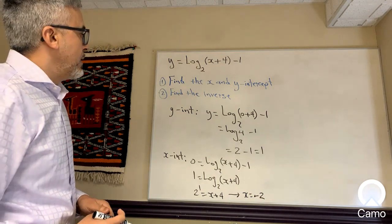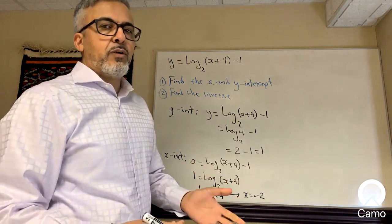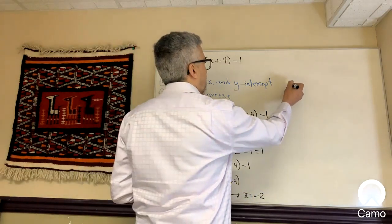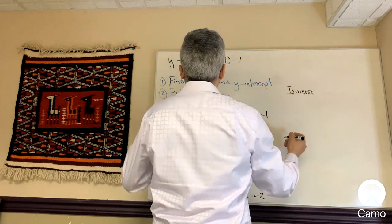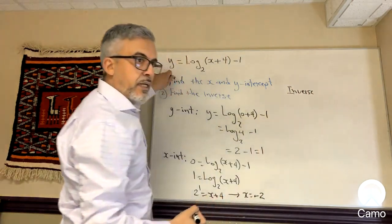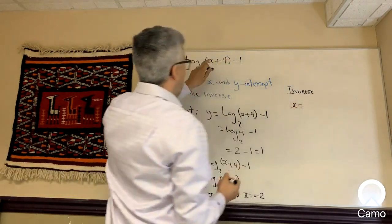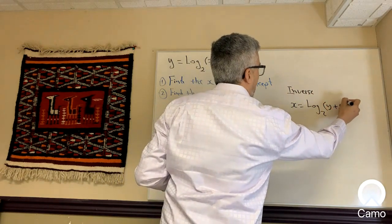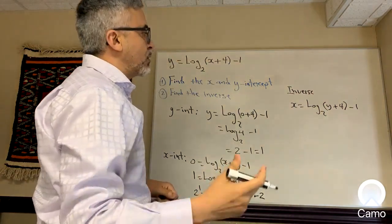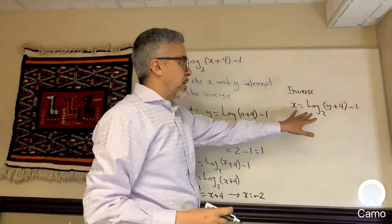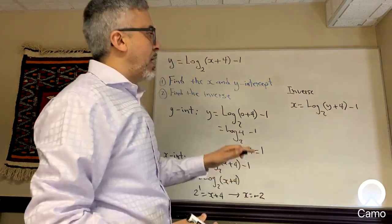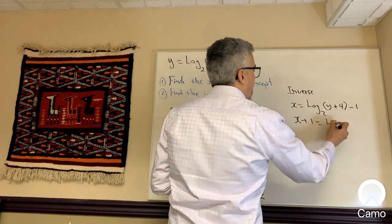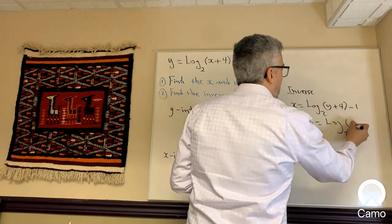Now for the inverse — when finding the inverse, all you need to do is swap x and y, then solve for y again. So simply, change the y to x and the x to y, giving you x equals log base 2 of (y plus 4) minus 1. To solve for y, we need to get rid of the log, so the first step is to move the negative 1 to the other side: x plus 1 equals log base 2 of (y plus 4).